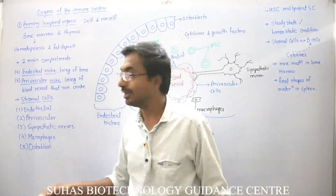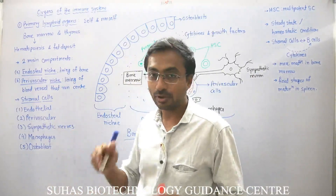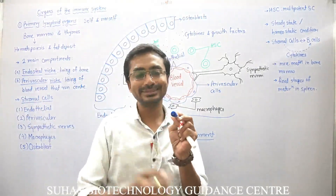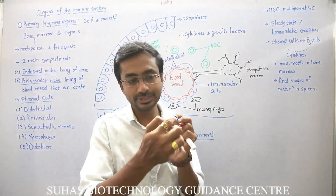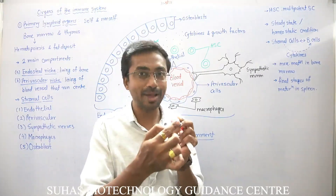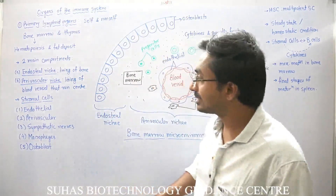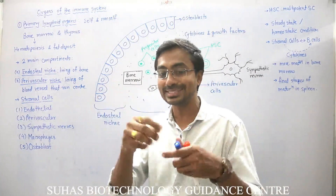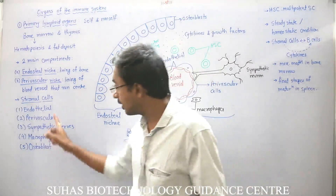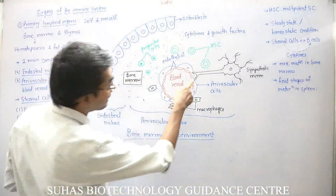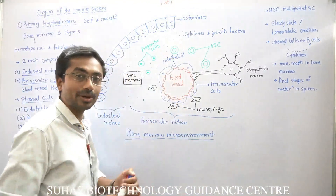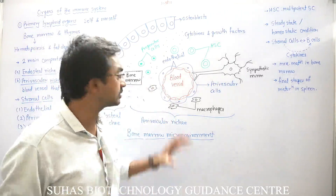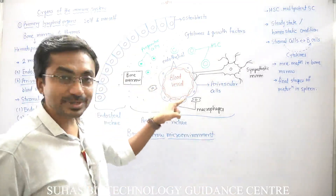There are mainly five types of stromal cells you can observe inside the bone marrow. If we cut a long bone, this portion is referred to as the bone marrow, and in that you can see the stromal cells, which are the actual cells of the bone marrow. Among them we have endothelial cells — you can see this is the blood vessel, because inside the bone marrow it is highly vascularized with a huge blood supply.